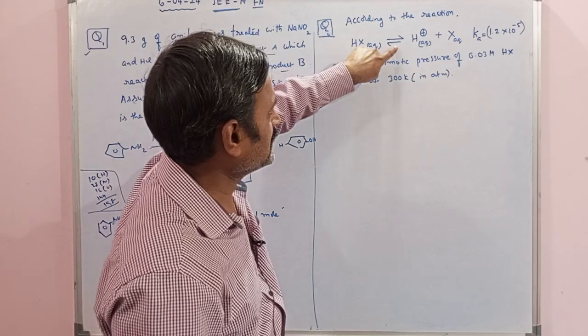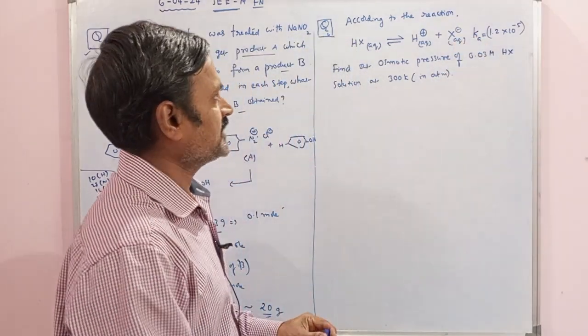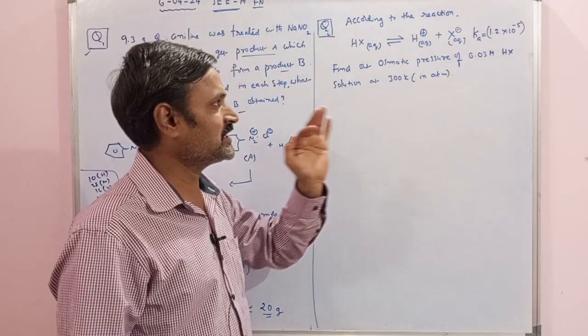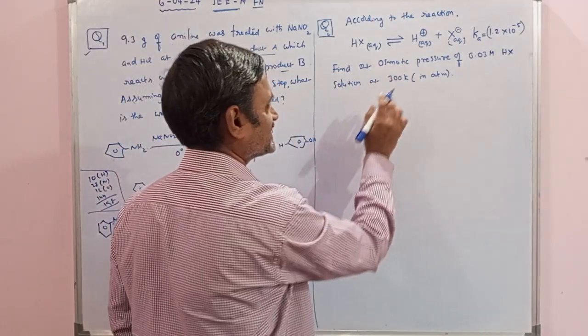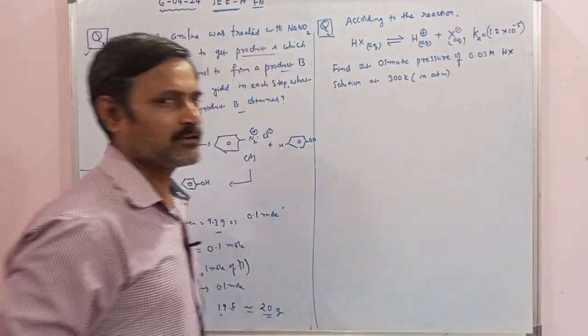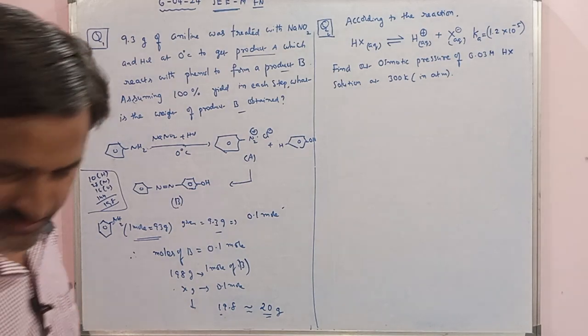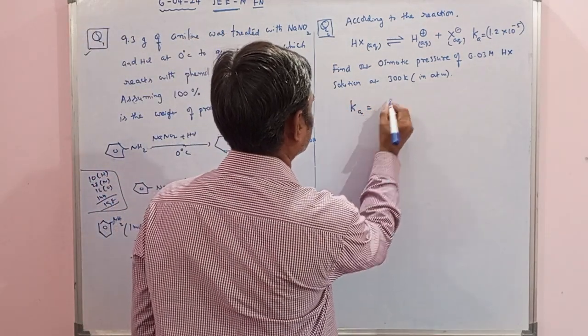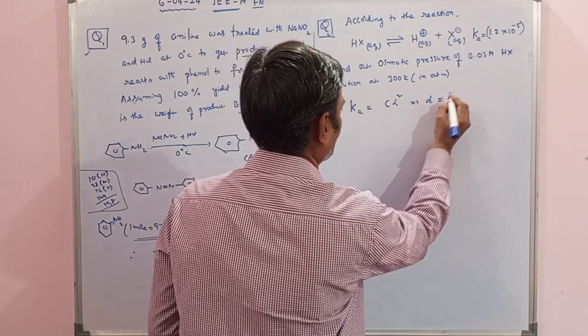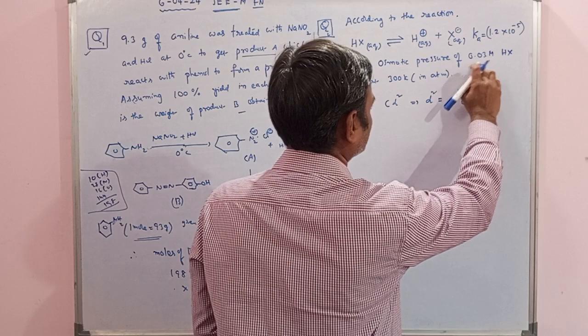The next one is ionic equilibrium related to osmotic pressure. According to the reaction, HX equilibrates to H+ plus X- in aqueous condition. HX is a weak acid with Ka given as 1.2 × 10^-5. This Ka value of 10^-5 means it's a weak acid. In weak acid cases, determining the alpha value is our main aim. Whenever we do the calculations, we use the Arrhenius equation. According to Arrhenius, Ka equals C alpha squared, as alpha is negligible for dissociation of weak acids.